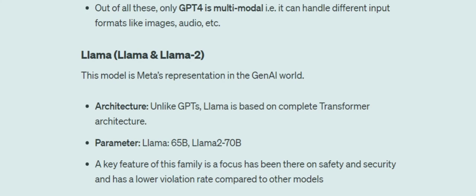Comparing parameter size, LLaMA is comparatively smaller than GPT. The first version had 65 billion parameters, and LLaMA 2 had nearly 70 billion. LLaMA 2 was trained on nearly 40% more data compared to LLaMA 1.